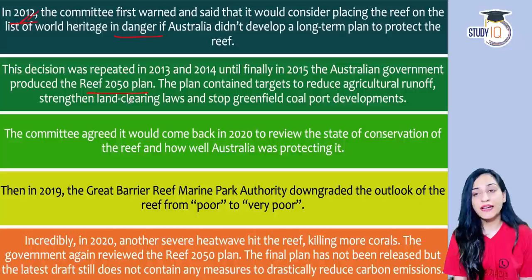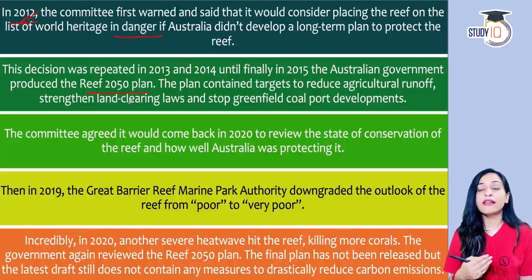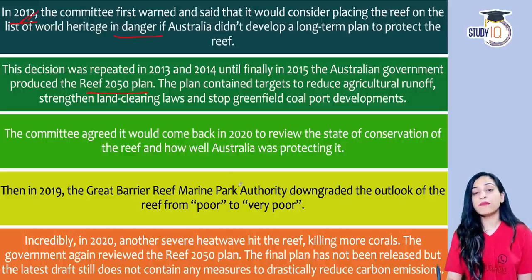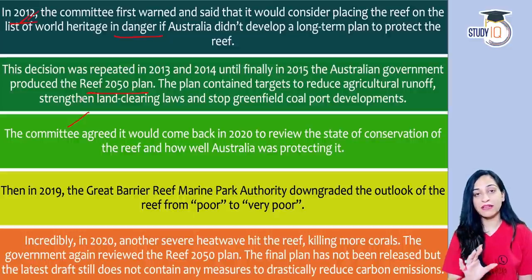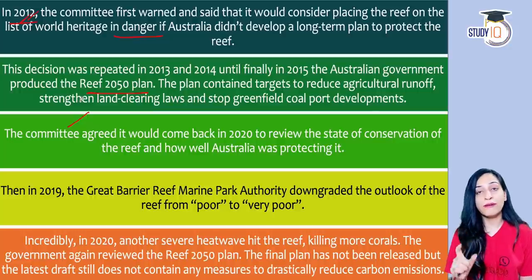The Reef 2050 Plan included targets such as reducing agricultural runoff, introducing land clearing laws, and restricting greenfield coal port developments. The committee agreed to review progress in 2020 to assess what had been achieved since 2015.